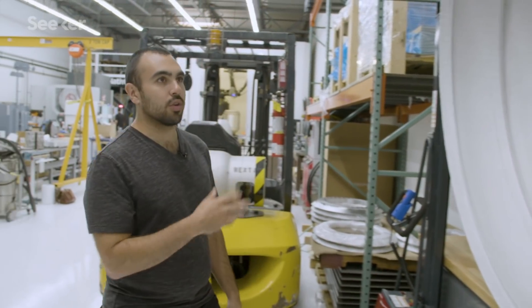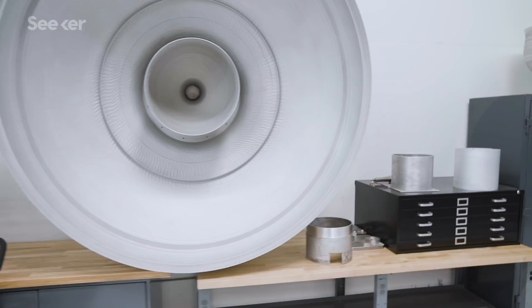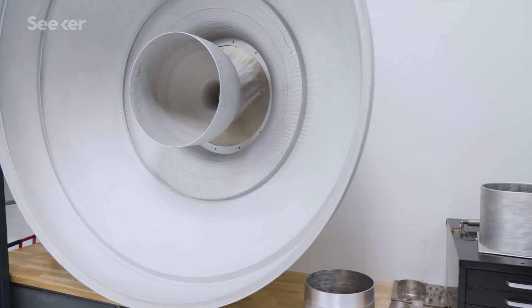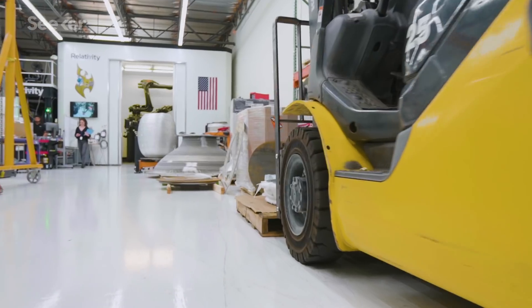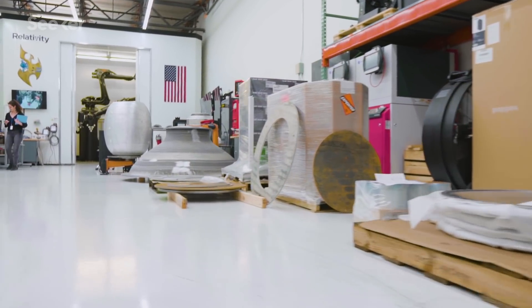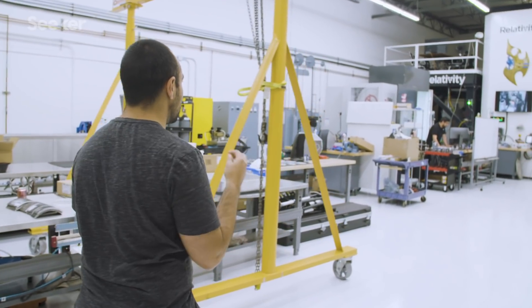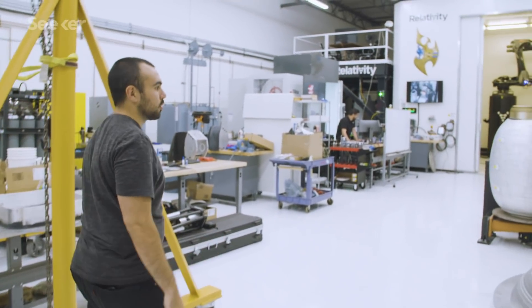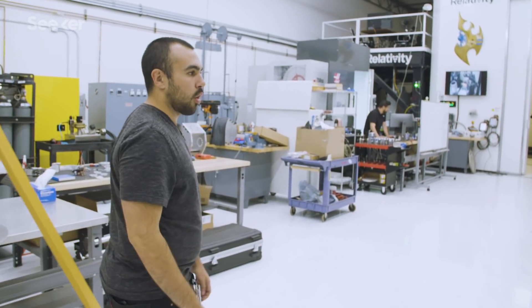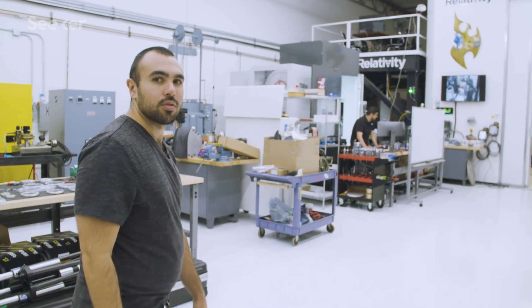Here's a version of one of our printed domes. These domes represent the end caps that will be on the ends of the propellant tanks on our rocket. There's a variety of other equipment out on the shop floor here, including Stargate in the back. We have CNC mills, heat treat furnaces, and a variety of equipment that supports the manufacturing, not only for the rocket, but for making the 3D printers as well.